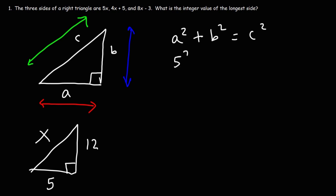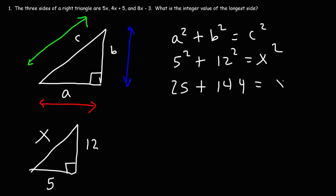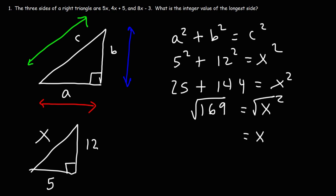So what we have is 5 squared plus 12 squared is equal to X squared. We need to do the math: 5 squared is 5 times 5, which is 25. 12 squared is 12 times 12, which is 144. If we add 144 and 25, that gives us 169. Our next step is to take the square root of both sides. The square root of X squared is X, and the square root of 169 is 13.